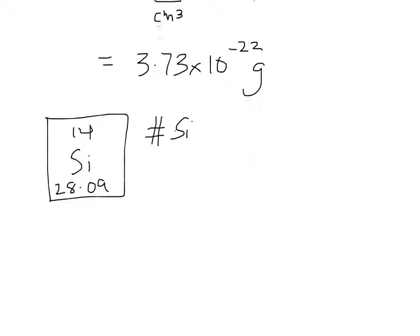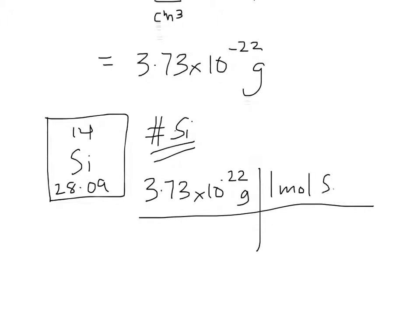So we want the number of silicon atoms. So we need to convert our grams, 3.73 times 10 to the minus 22 into moles. So we know a mole of silicon atoms weighs 28.09 grams.